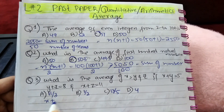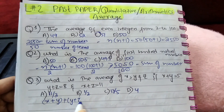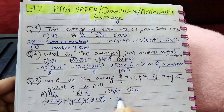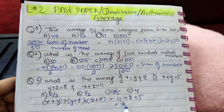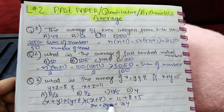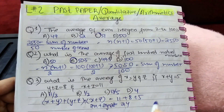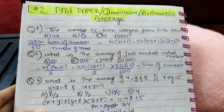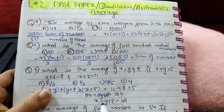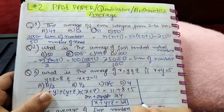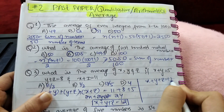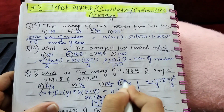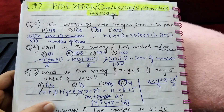Adding x plus y, y plus z, and x plus z gives 2x plus 2y plus 2z, which equals 5 plus 8 plus 11 equals 24. Taking 2 as common, x plus y plus z equals 12. To calculate the average, divide by 3, so x plus y plus z divided by 3 equals 12 divided by 3, which is 4. Option D is the correct option.